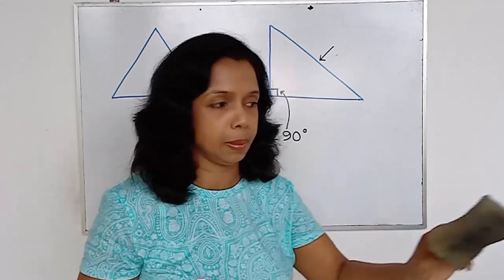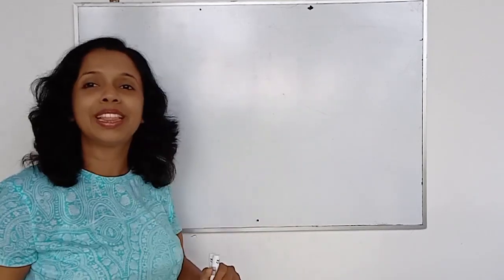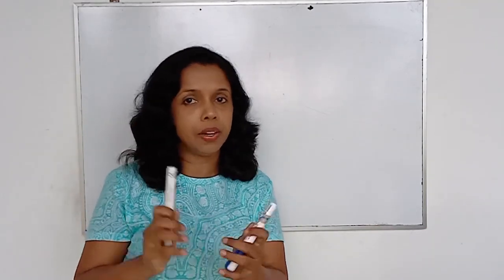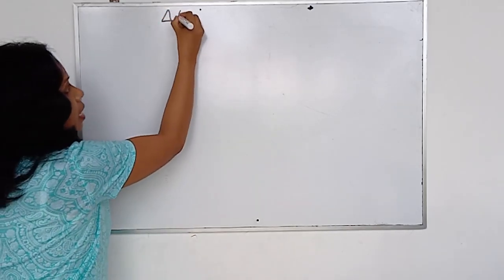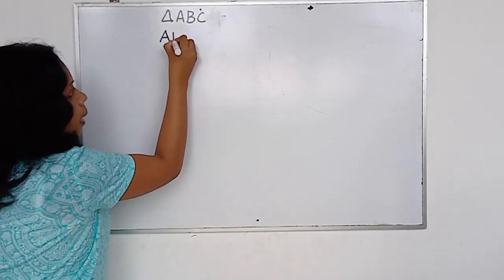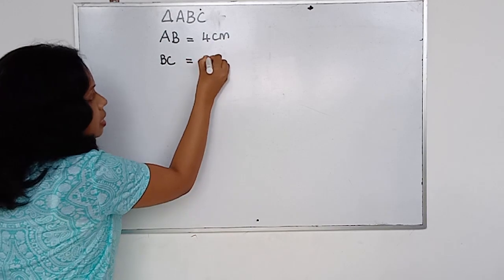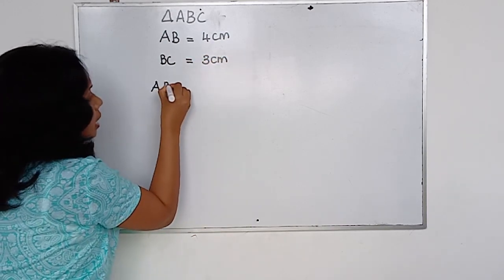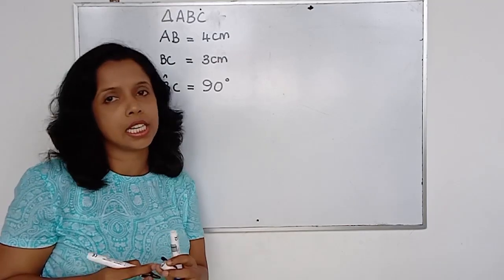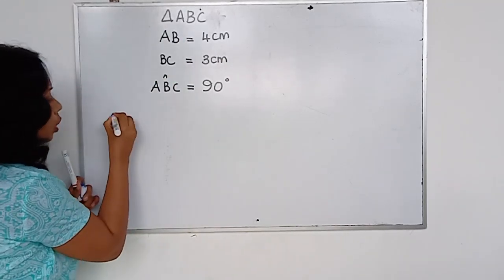Before going to the theorem, let's do something. You want to have your mathematical instrument box with you and construct a triangle with me. I'll give you the information. You want to construct ABC triangle. The side AB is 4 centimetres, BC is 3 centimetres, and the angle ABC — the B angle — is 90 degrees. Before going for the construction, what we want to do is have the rough sketch first.